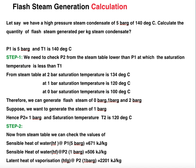Now let's work through a flash steam generation calculation example. We have high pressure steam condensate at 5 bar gauge and 140°C. Calculate the quantity of flash steam generated per kg of steam condensate. Here P1 is 5 bar gauge and T1 is 140°C. In step 1, we check P2 from the steam table — a pressure lower than P1 at which the saturation temperature is less than T1.